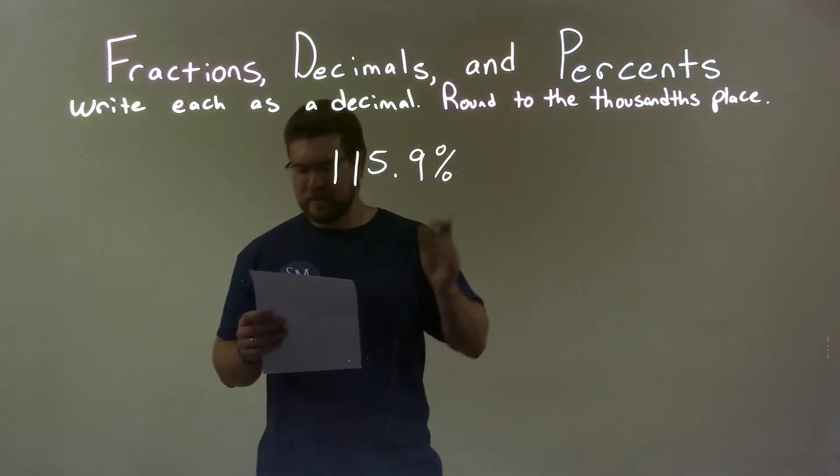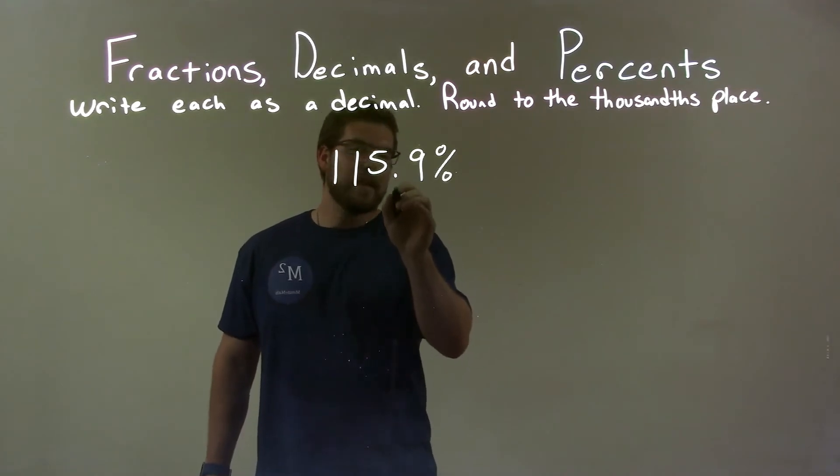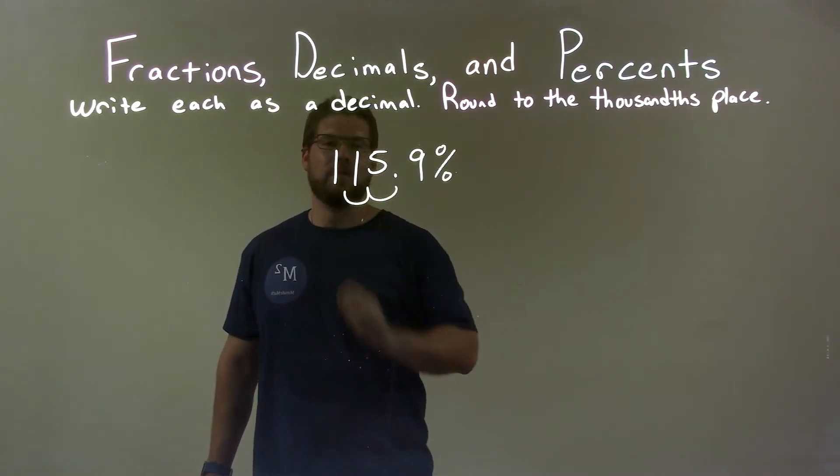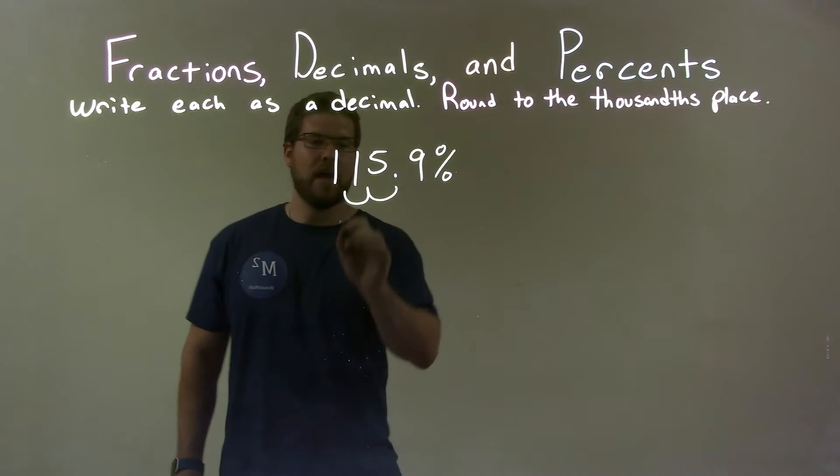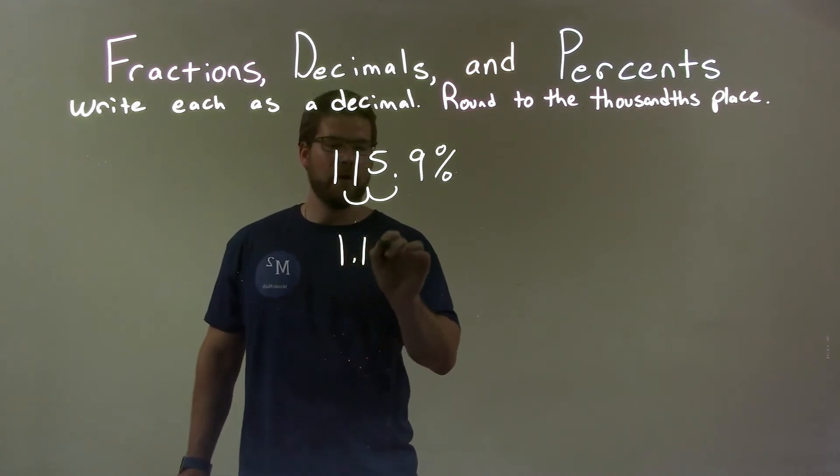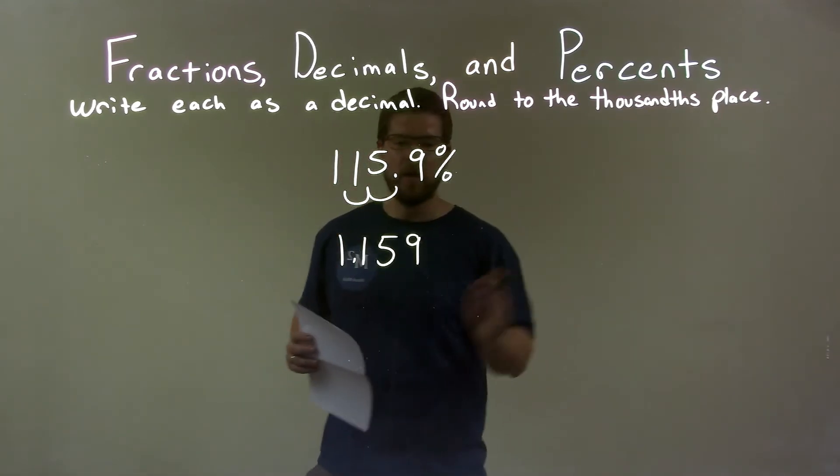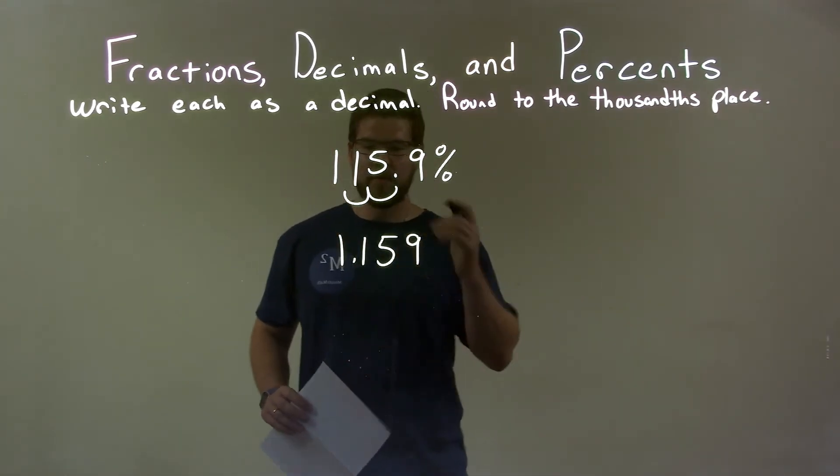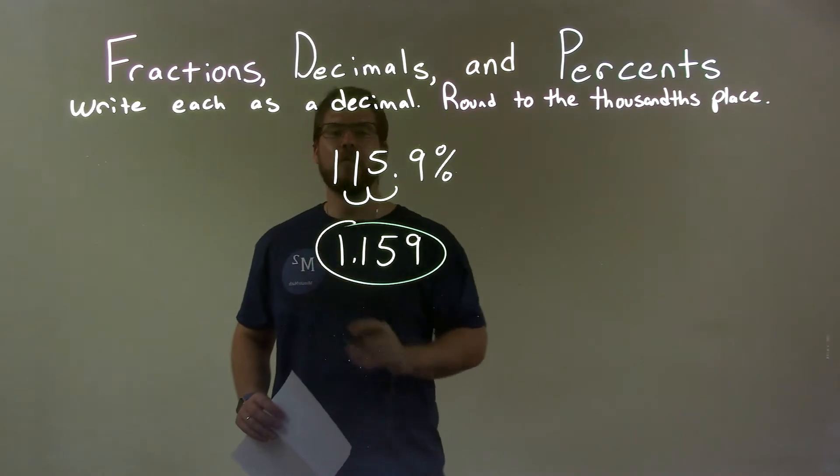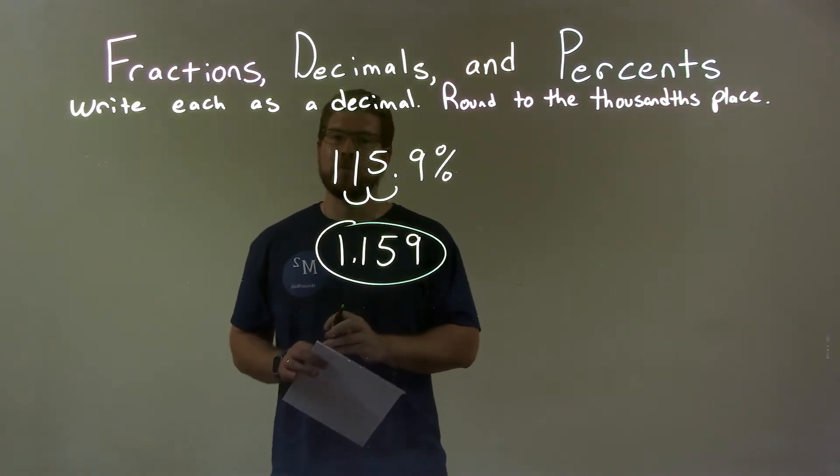So, 115.9%. Well, again, we move the decimal place two spots to the left. That's it. So, we're left with 1.159. Now, they say we have to round to the nearest thousandths. Well, the nine is in the thousandths place, so we're good. So, 1.159 is our final answer.